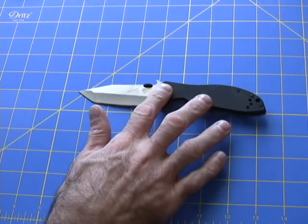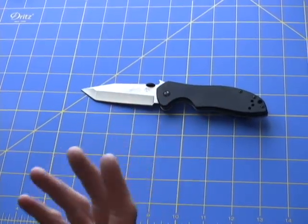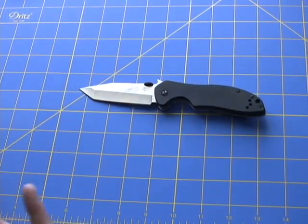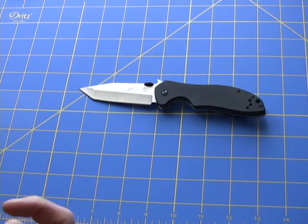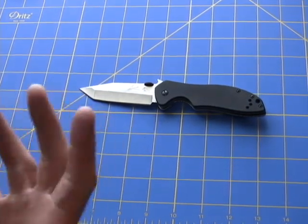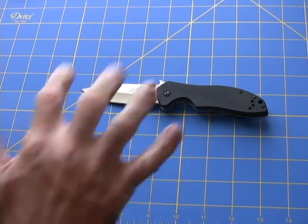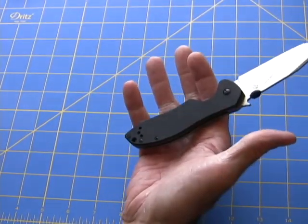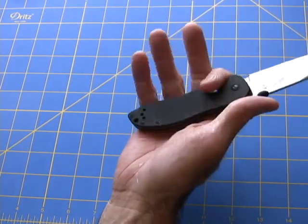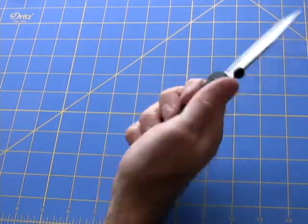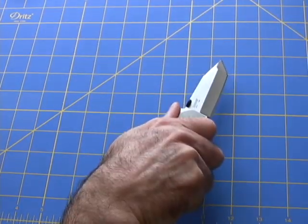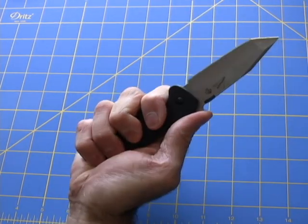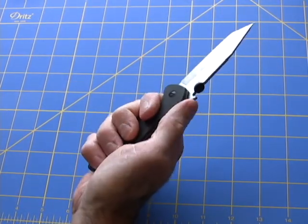I have fairly decent sized hands, I wear large gloves. One thing I like in a knife is not having a real small handle. I like to have a full purchase, a full grip on the handle. As you can see, my whole hand goes on this knife no problem whatsoever.